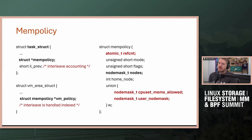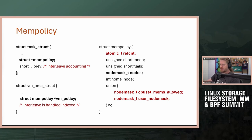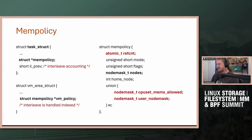Where are we with mem policy today? It is task-local, meaning every single thread can have a separate mem policy covering all of its VMAs. It can also be VMA-local, where an individual VMA including shared VMAs can have an explicit mem policy. There are some warts — interleave accounting and ref counts — that need to be addressed. But a mem policy is basically a mode and a node mask. There are some interactions with CPU sets or cgroups, and the system is relatively small but has many interconnected components.